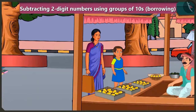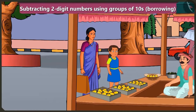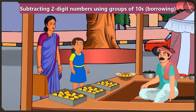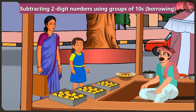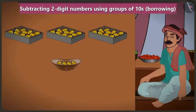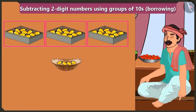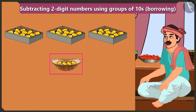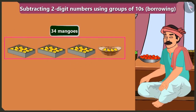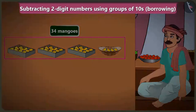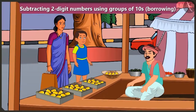Mommy, look, we can get mangoes from there. Brother, how many mangoes are there in one box? There are ten mangoes in one box. I have three tens and four ones, means thirty-four mangoes. How many mangoes do you want? I want eight mangoes.